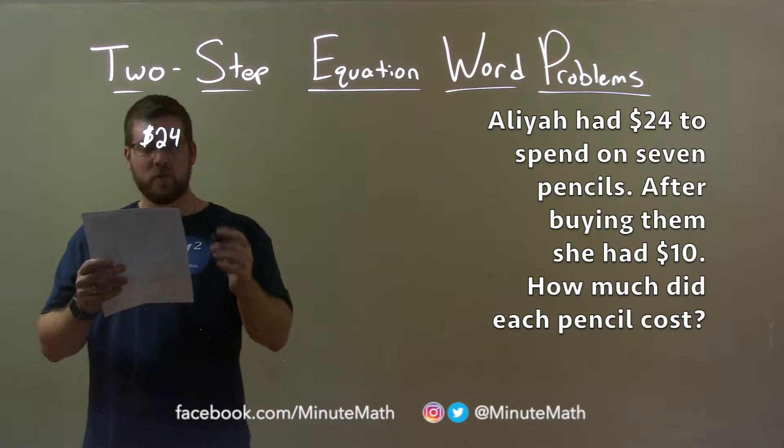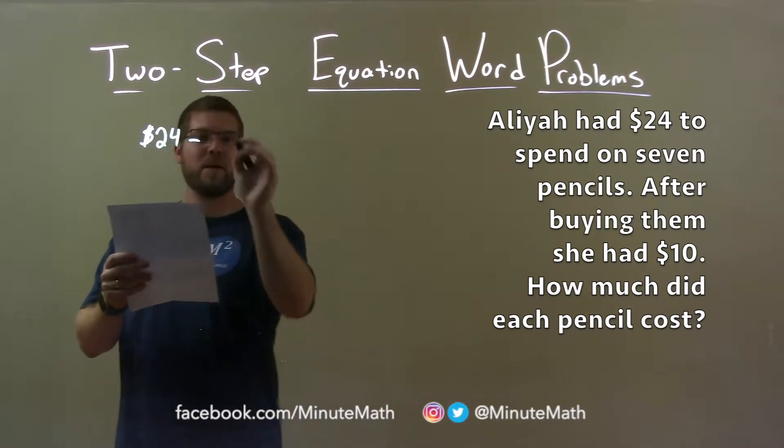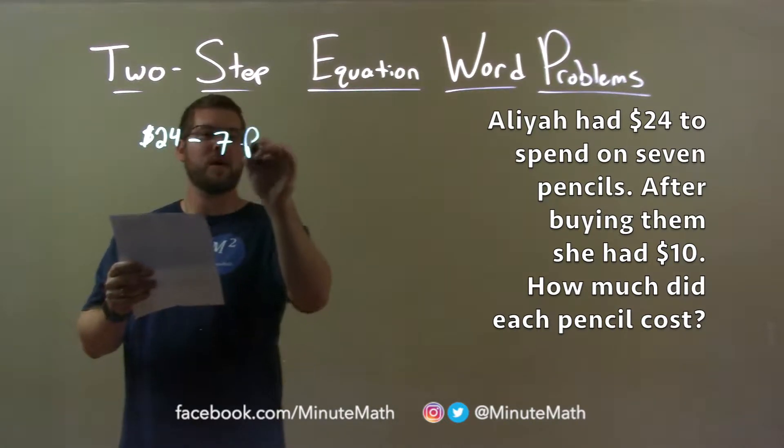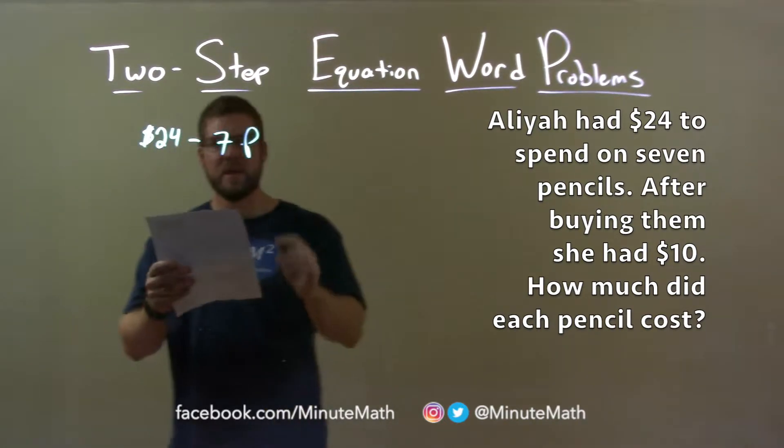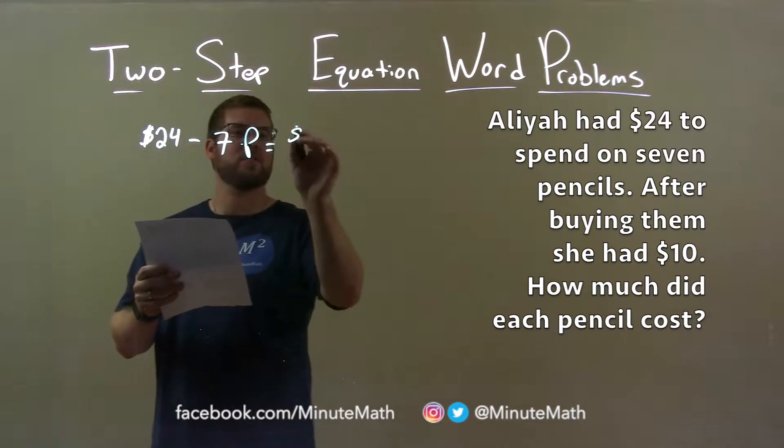So, our $24 minus 7 times the price of the pencil, right? 7P. And afterwards, after all of that, she had $10 left over.